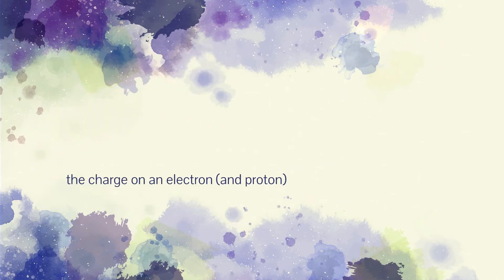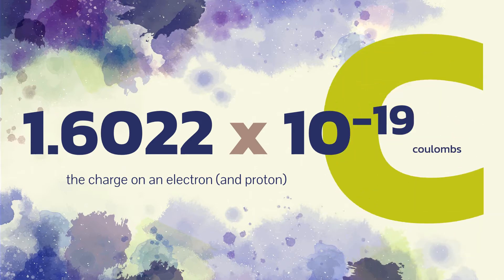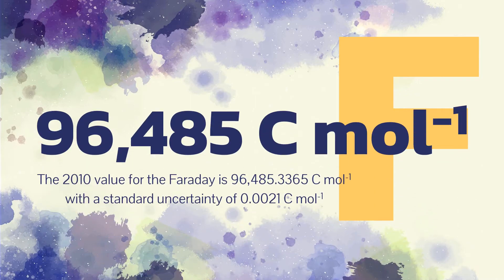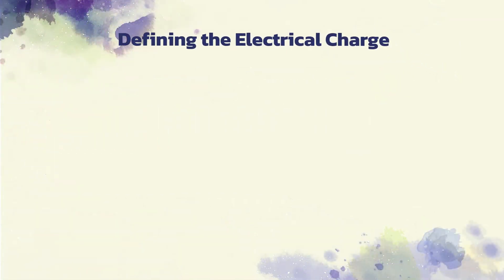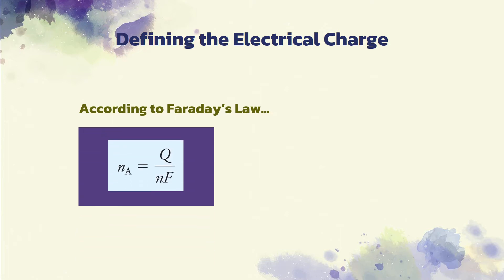You may recall that each electron has a charge of 1.6022 × 10 to the power of negative 19 coulombs. Thus, the Faraday is equal to 96,485 coulombs per mole. Furthermore, Faraday's law relates the number of moles of the analyte A, N sub A, to the charge Q.